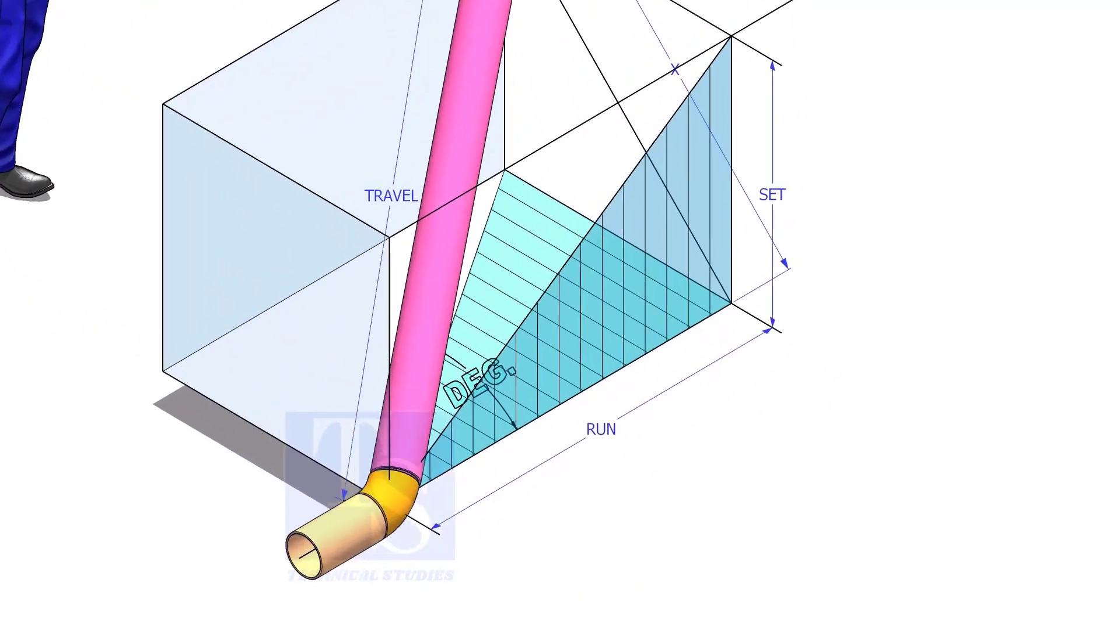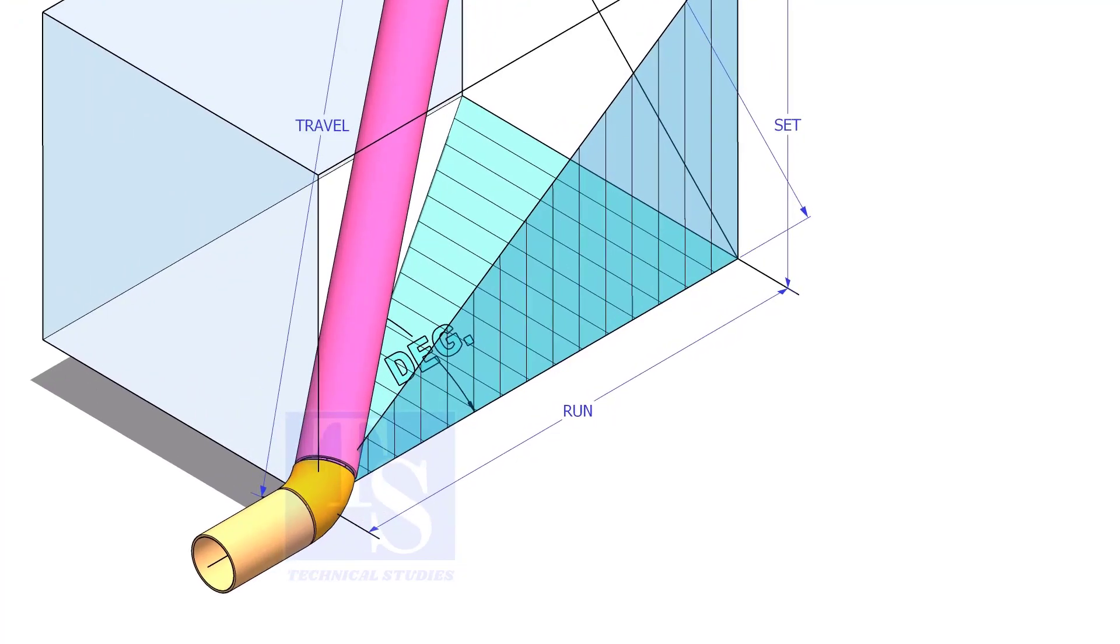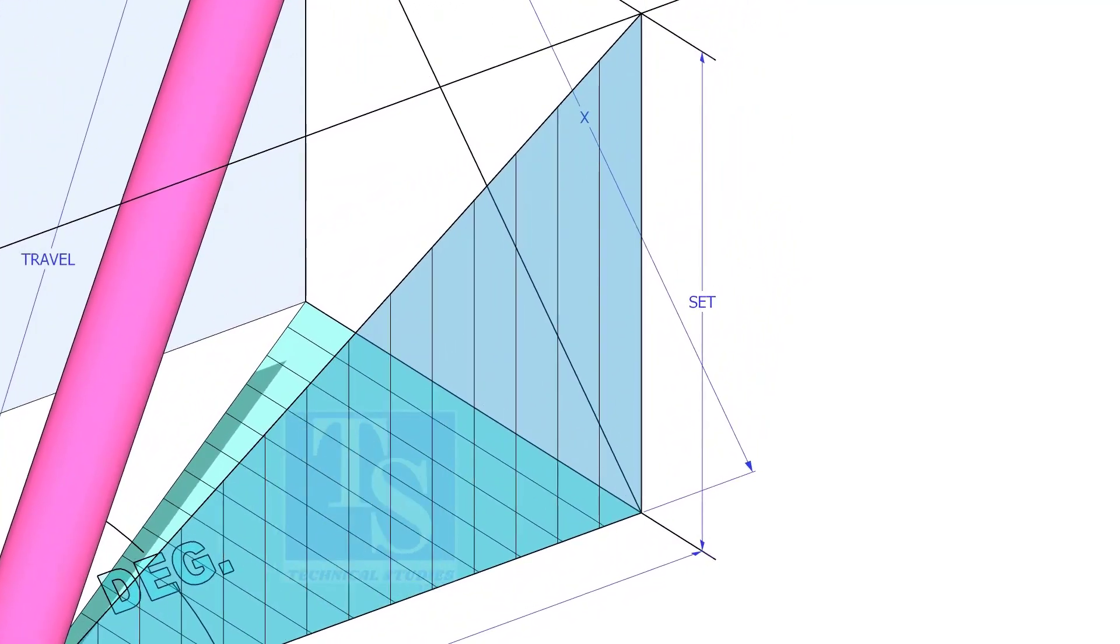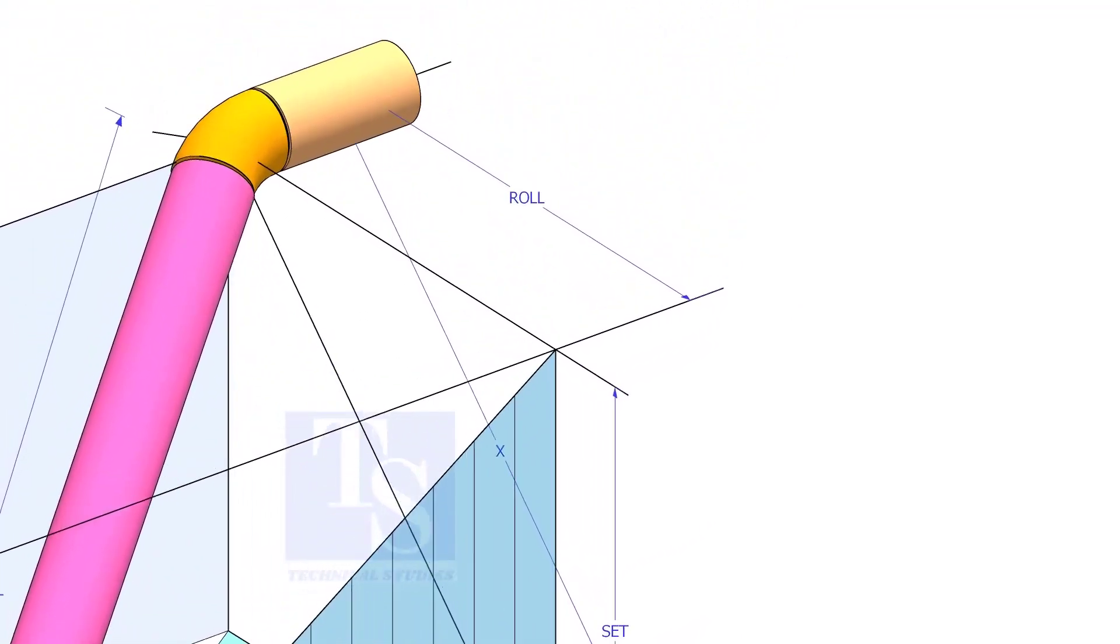In this video, I will show you how to calculate the travel length and the including angle of a double rolled offset pipe.